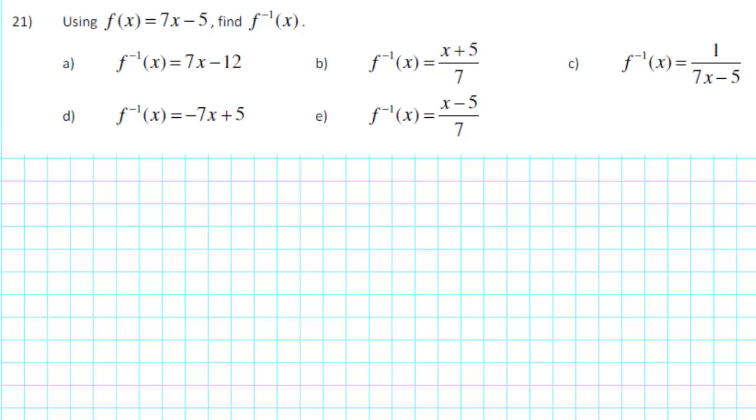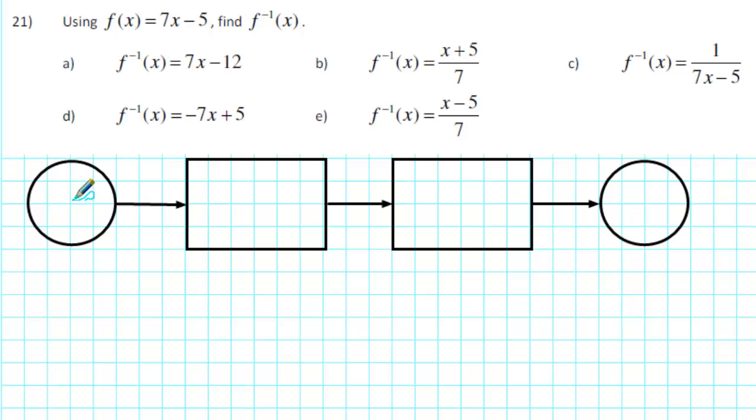Well, let's first of all write down the process for finding f inverse of x. For f, we start off with an input x, and then we multiply the x by 7.